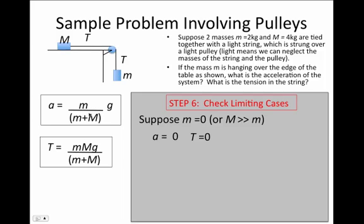And if I look in these expressions and I look at what happens when I set little m equal to zero, it looks like a would be zero because little m appears in the numerator. It looks like the tension would be zero. That seems intuitive to me because in this case, I expect capital M sitting on the table and a limp string just laying over the edge of the pulley.